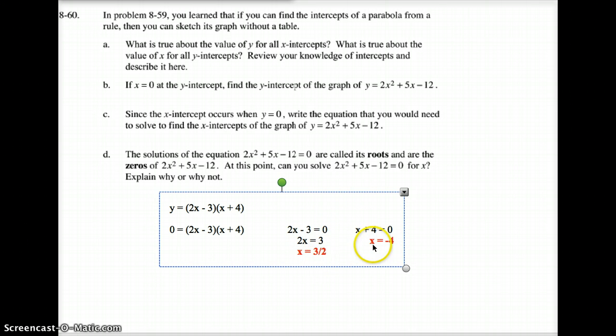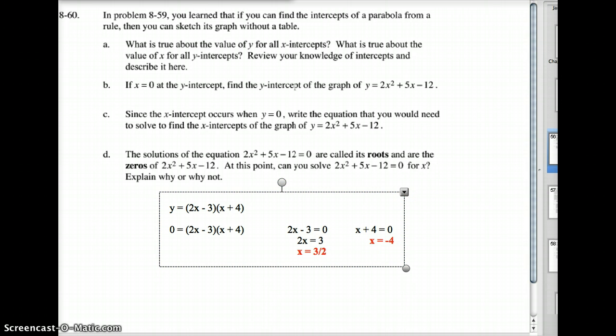These, by the way, are called your roots. Your zero property product gets you the roots of this. And by the roots of that, that means where it crosses the x-axis on that.